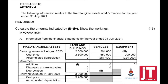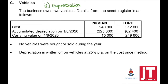Looking at question number two, we need to calculate what is the depreciation for this accounting period on vehicles. Looking at the information provided, the business owns two vehicles. Details from the asset register are as follows. Just a reminder — what is an asset register? It's an individual record of all of my assets, each one individually. So if I look at the tangible asset note, that is a summary of everything added together.